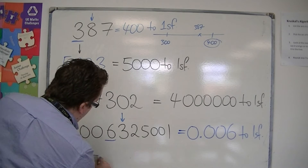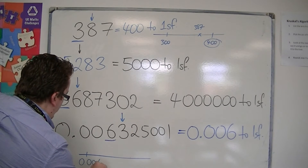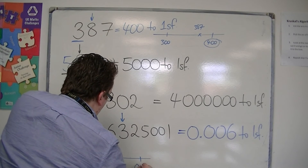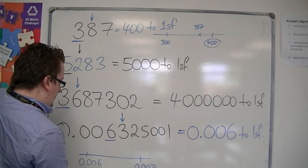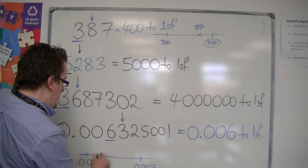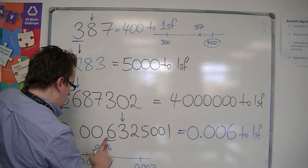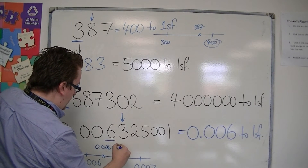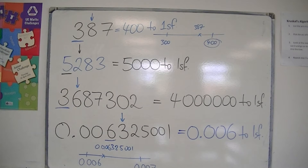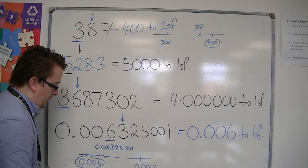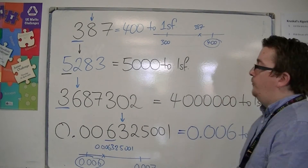To understand this on our number line, what we have is 0.006 and 0.007. Where is 0.000632501 on the number line? It's roughly about there — closer to 0.006. So this is 0.006 to one significant figure.